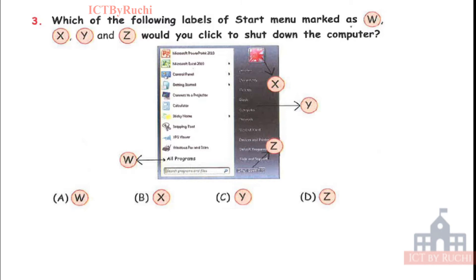Question number 3. Which of the following label of start menu marked as W, X, Y and Z would you click to shut down the computer? A. W, B. X, C. Y, D. Z. So you should know what are W, X, Y, Z and then you will see what will you click to shut down the computer. It is very easy. Tell me the answer fast. Answer is D. As you can see in the picture itself, here Z, Z shutdown is written. So we will click on shut down icon to shut down the computer.